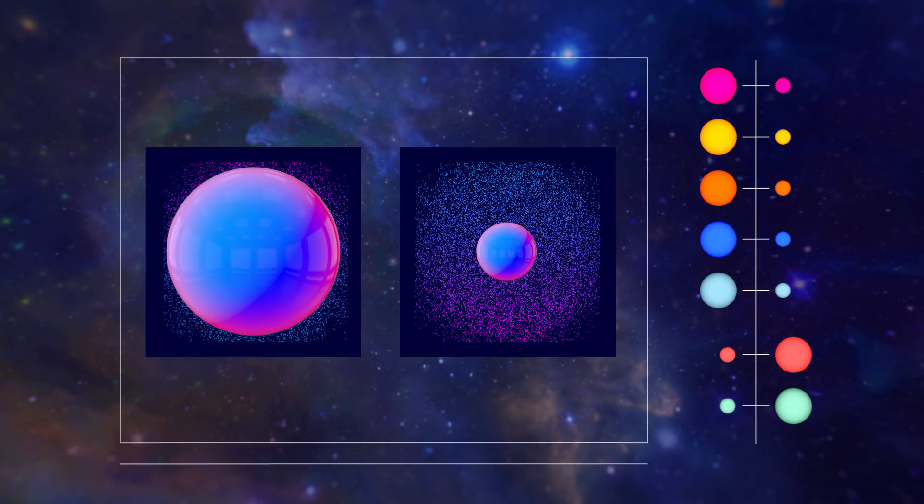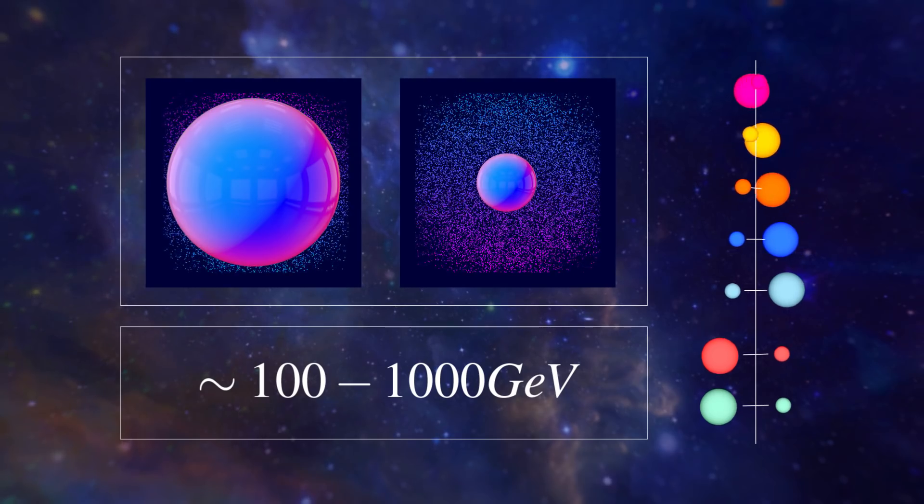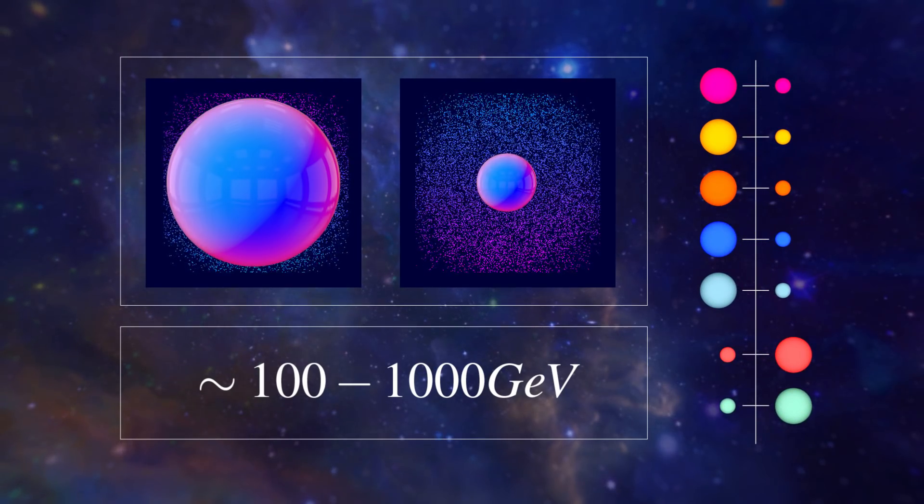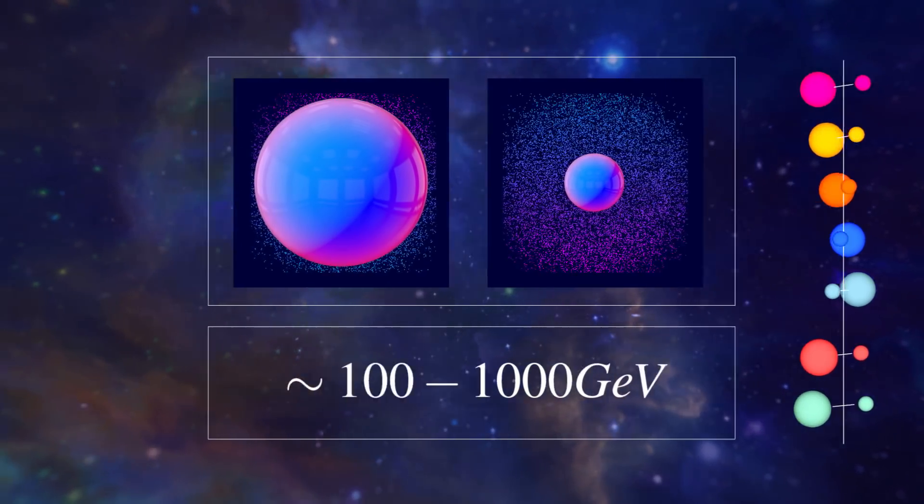To solve the hierarchy problem perfectly, those particles would need to have masses at around what we call the electroweak energy. That's the energy at which the electromagnetic and weak nuclear forces merge into the same force. Physicists had hoped that by smashing particles together hard enough in the Large Hadron Collider, there'd be enough energy in those collisions to produce a supersymmetric particle. And in fact, there should have been, at least for the versions of SUSY that most neatly solve the hierarchy problem. But the LHC has seen nothing.